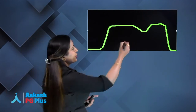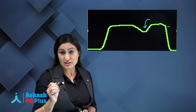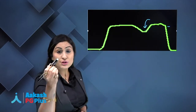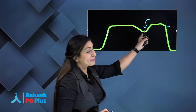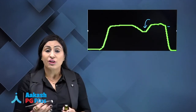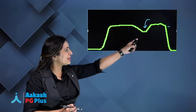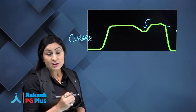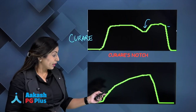This capnogram shows a notch during the expiratory phase, where it appears as if the patient is trying to breathe and trigger an inspiration. The ventilator is trying to expire while the patient is trying to inspire — meaning the patient's spontaneous efforts have returned and you need to top up the dose of muscle relaxants. This is called curare's notch.